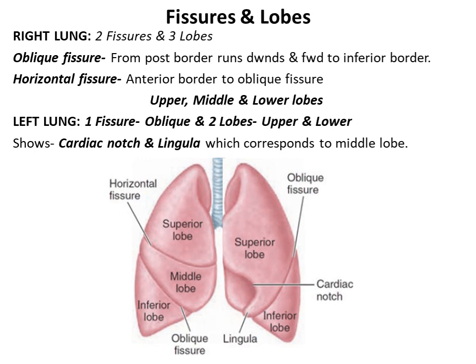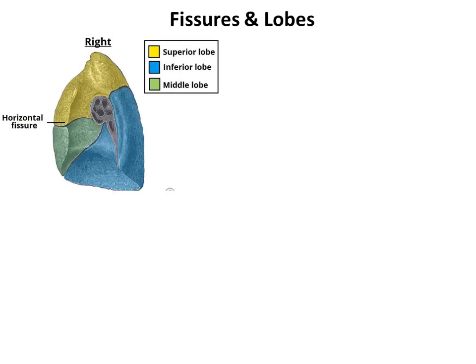The anterior border of the left lung in its lower part shows a characteristic deep notch. This notch is due to the presence of the heart on the left side, hence called the cardiac notch. The part of the left lung below the cardiac notch shows a tongue-shaped projection called the lingula. This lingula corresponds to the middle lobe of the lower left lung. The fissures cut through the whole thickness of the lungs except the hilum, and allow uniform expansion during respiration. The lower lobe expands downwards and backwards, whereas the upper and middle lobes expand upwards and forwards.